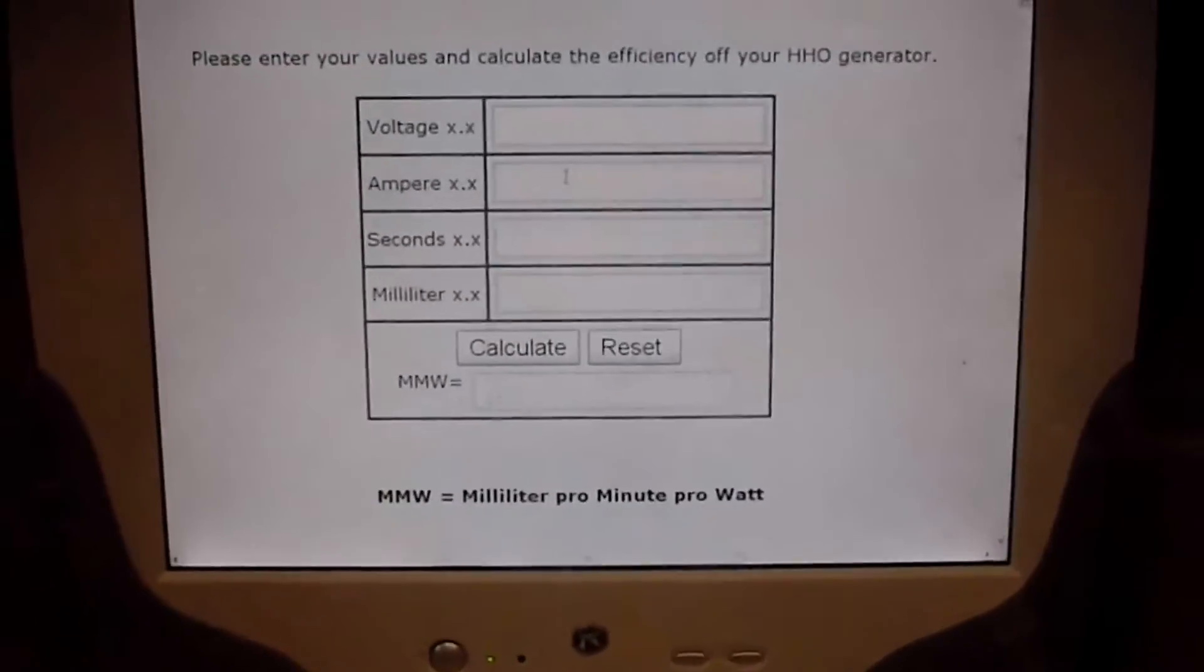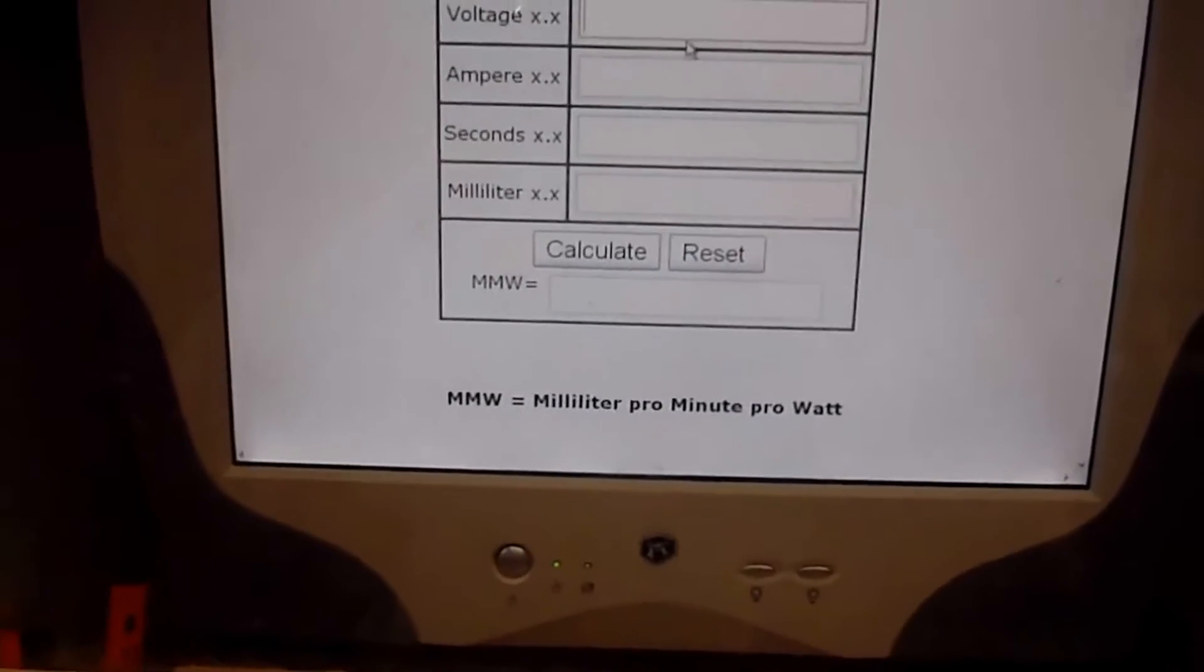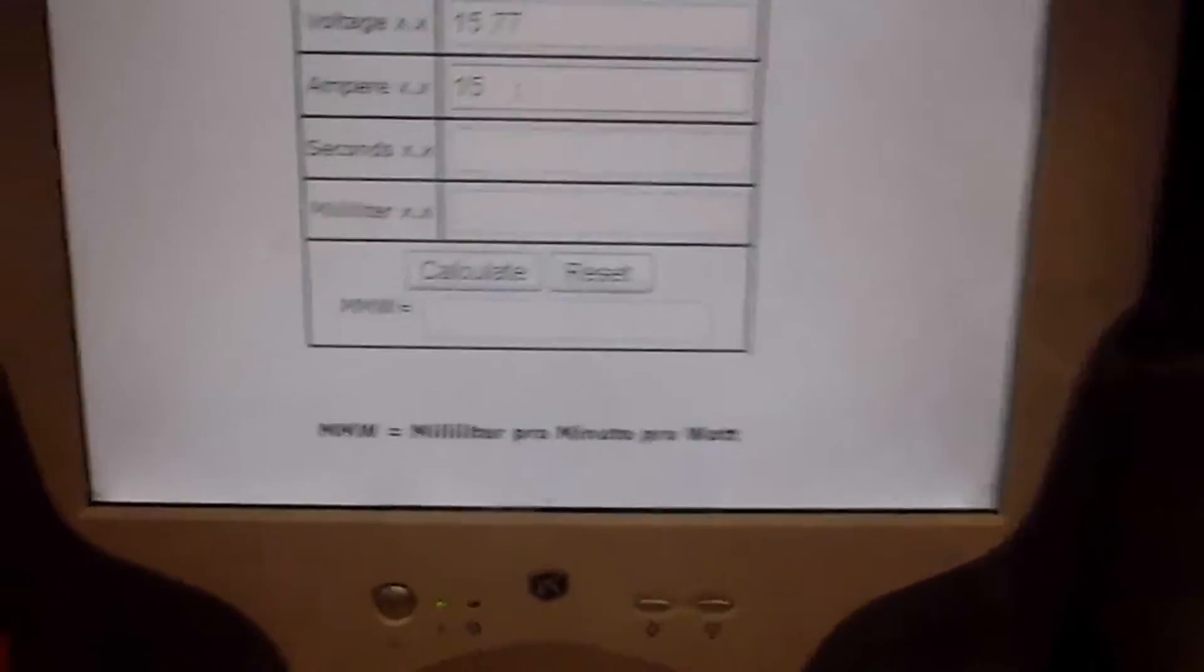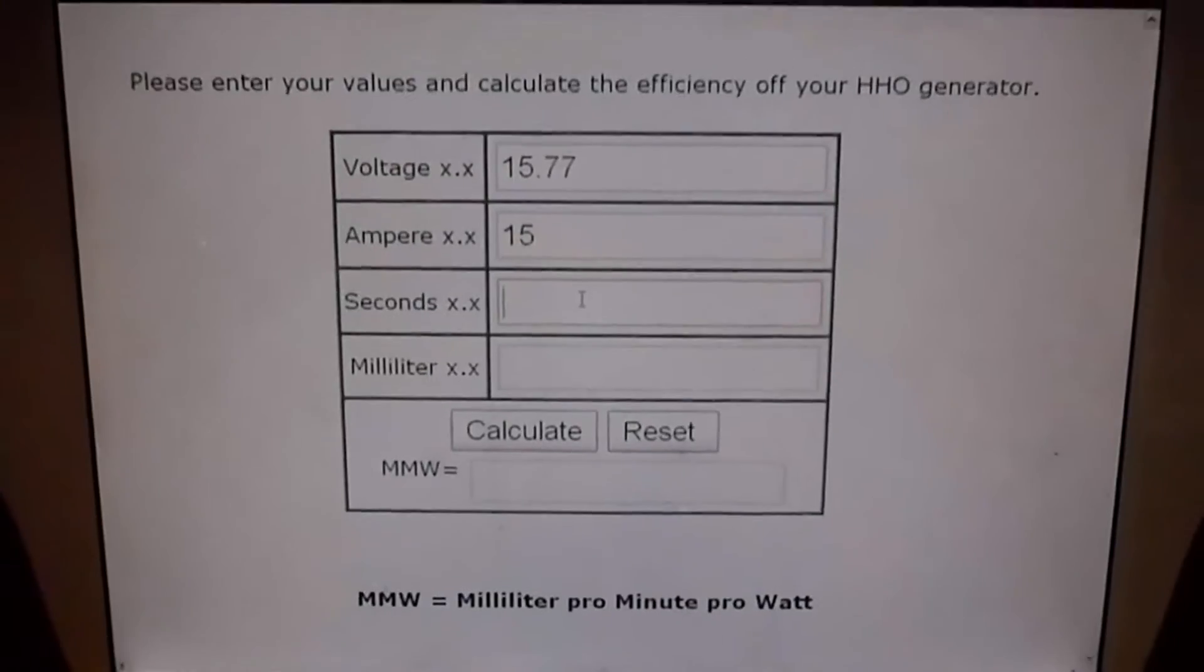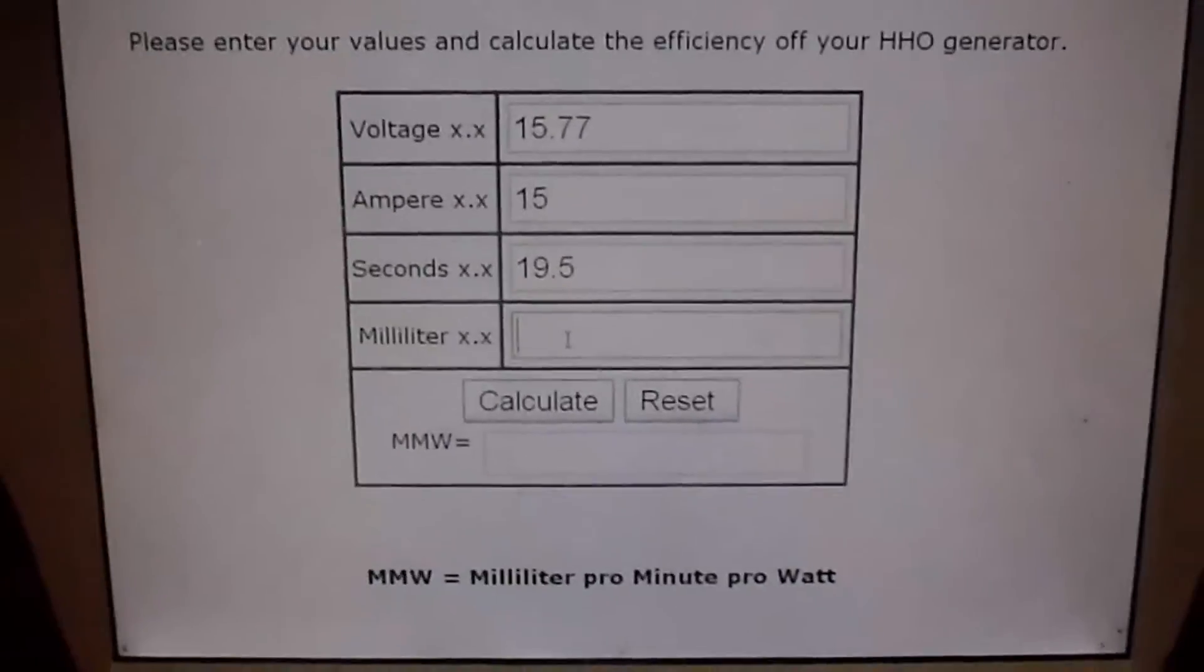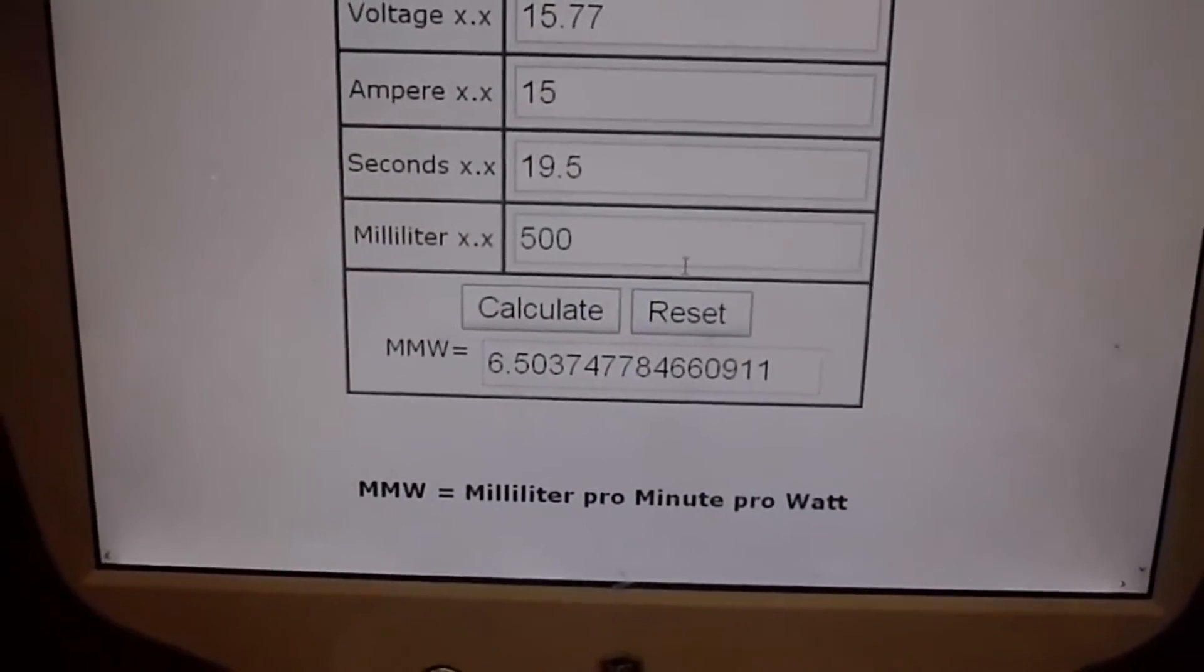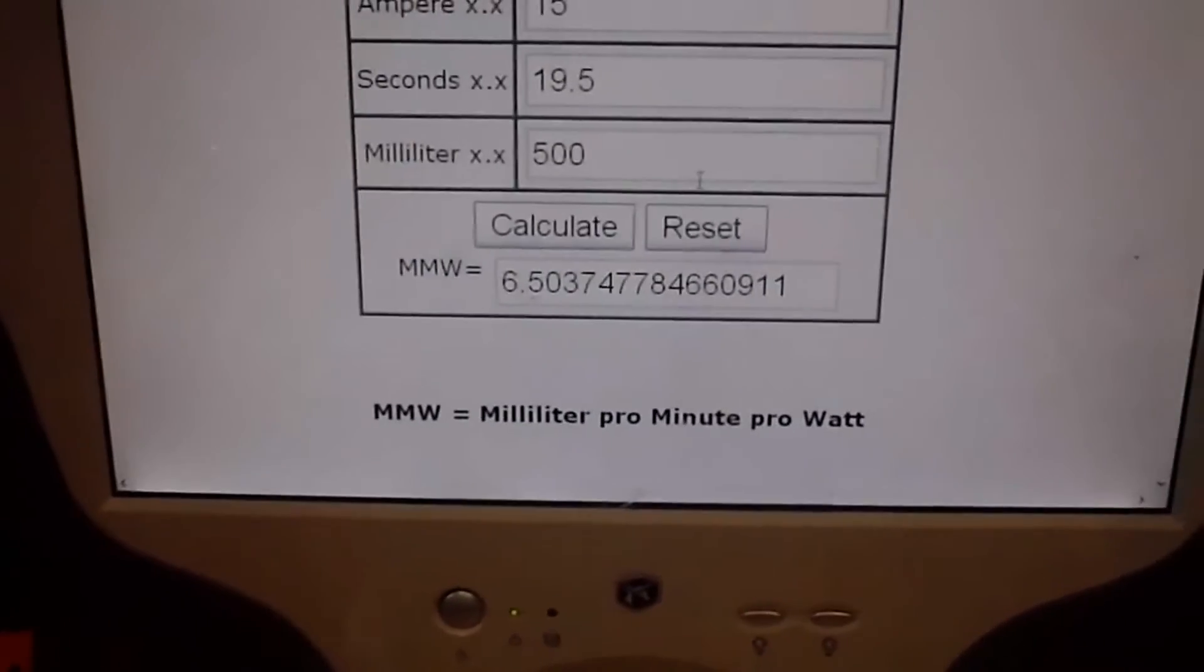Okay. Reset. And, we had 15.77 volts, and we're right at 15 amps. Now, we figured 19.5 seconds, and a half of liters, 500 milliliters. And, that puts it at 6.5 mmw.